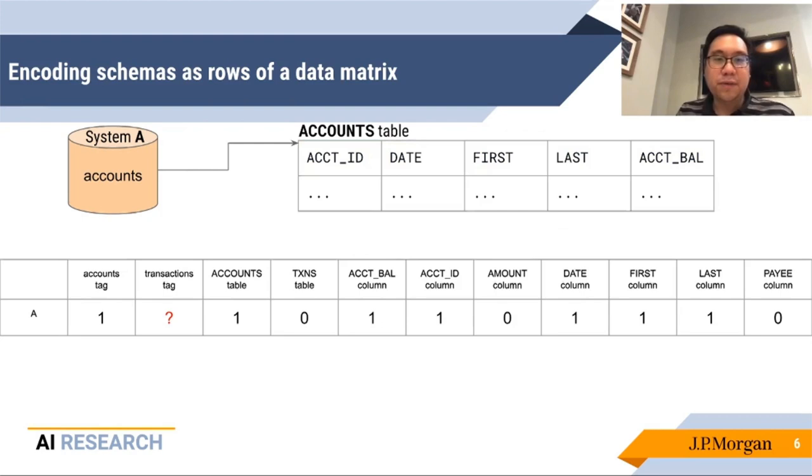First, we encode this into a matrix. Those of you who know me, I like matrices. This is a very nice way of thinking about the data in an interpretable manner, and we'll come back to that several times about understanding the interpretability of what we're building. So to construct this data matrix, what I've done here is collect all the information we have about the semantic tags, and also the names of the tables and fields that we see.